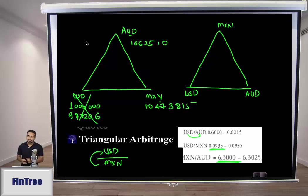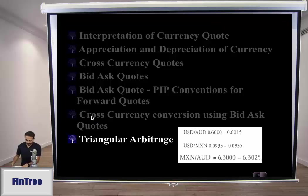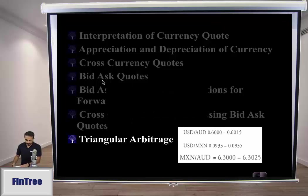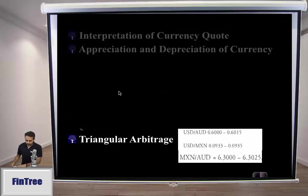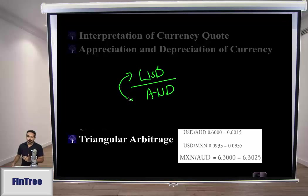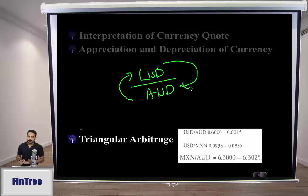Taking the second path: start with 1 million USD, divide by ask (0.0935) to get MXN, divide by 6.3025 to get AUD, then multiply by bid (0.6) to return to USD — giving approximately 1.018 million USD. Remove the original 1 million and the remaining 0.018 is your arbitrage profit. The rule is simple: going up the quote multiply by bid; going down the quote divide by ask.